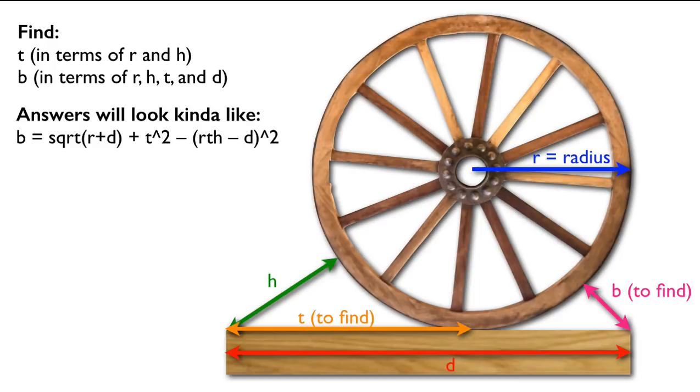And your answer is going to look something like this: the square root of the quantity R plus D plus T squared minus the quantity R, T, H minus D quantity squared. Now I just made that up. That's just a mishmash. That doesn't mean anything. But that's sort of what your answer might look like.